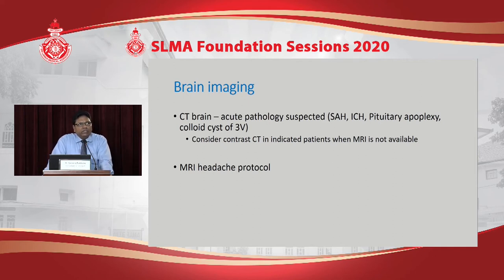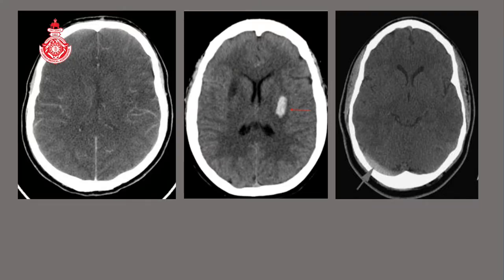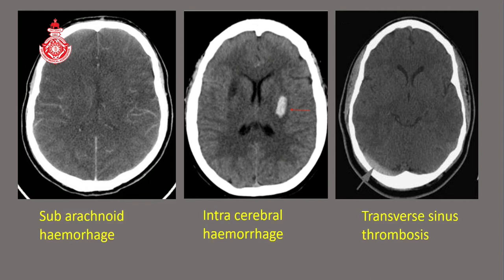Brain imaging — either CT or MRI — is the next tool. Non-contrast CT is very useful in the acute situation. For suspected subarachnoid hemorrhage presenting within six hours, there is about 99% sensitivity on CT, provided hematocrit is above 30 and the scan is read by a radiologist looking specifically for subarachnoid blood. CT can also pick up intracerebral hemorrhage, pituitary apoplexy, and transverse sinus thrombosis.